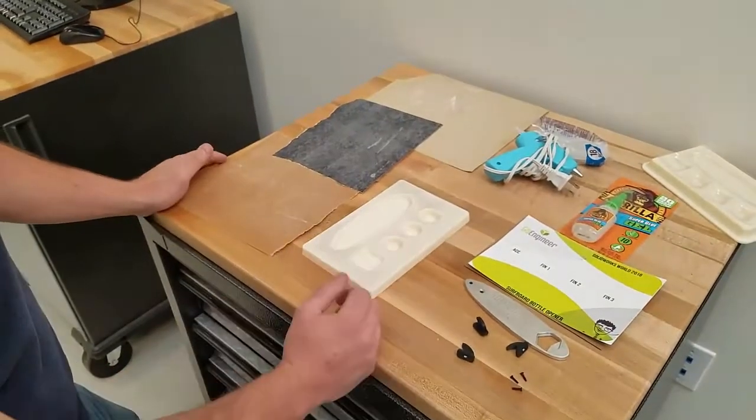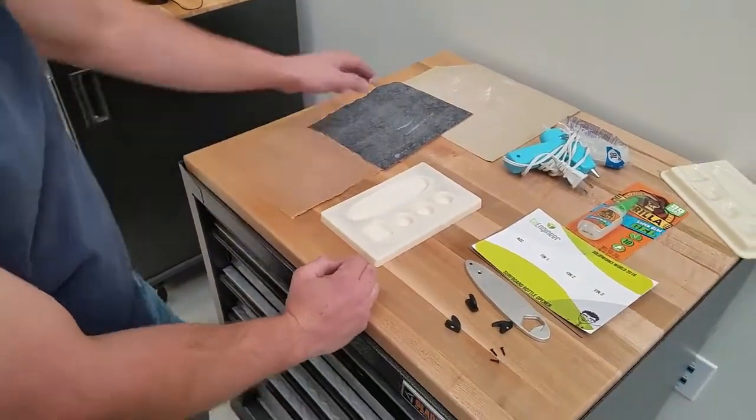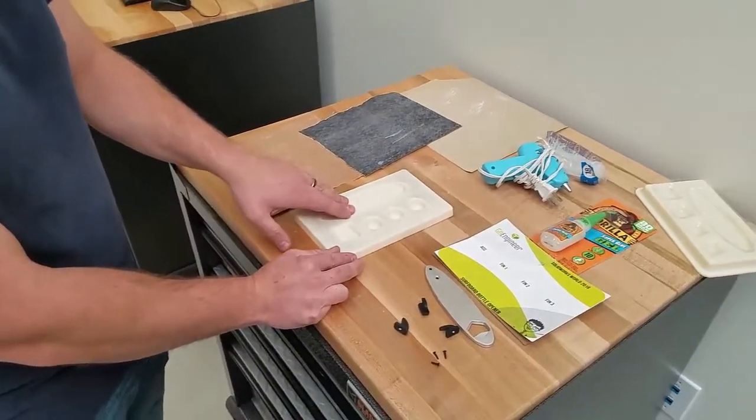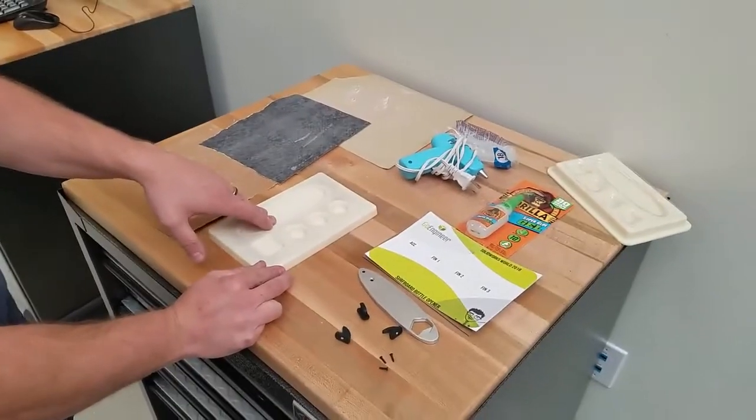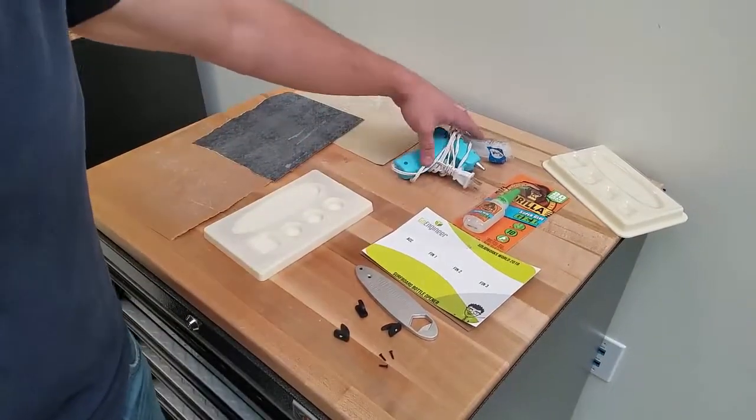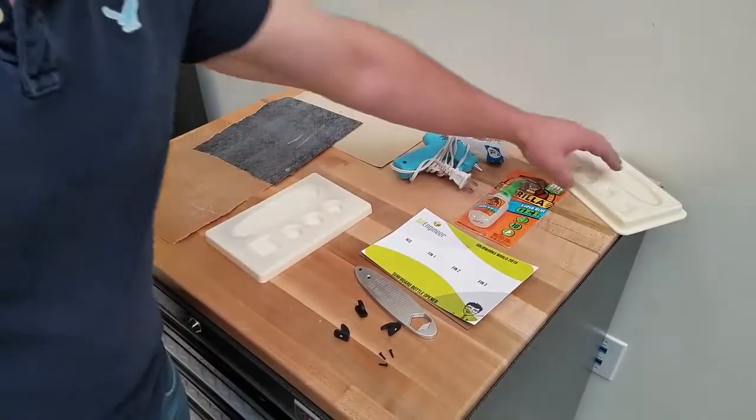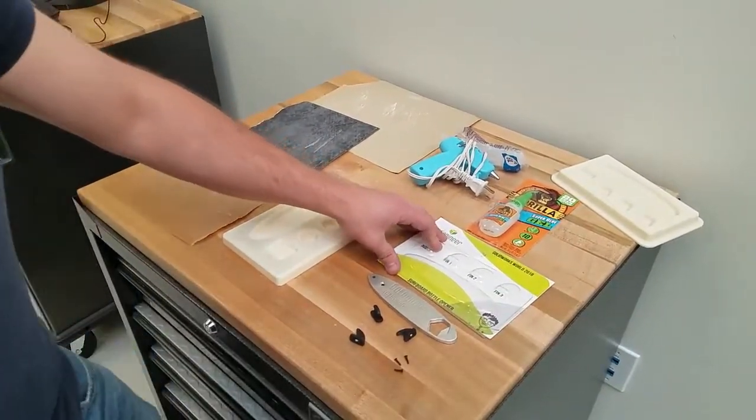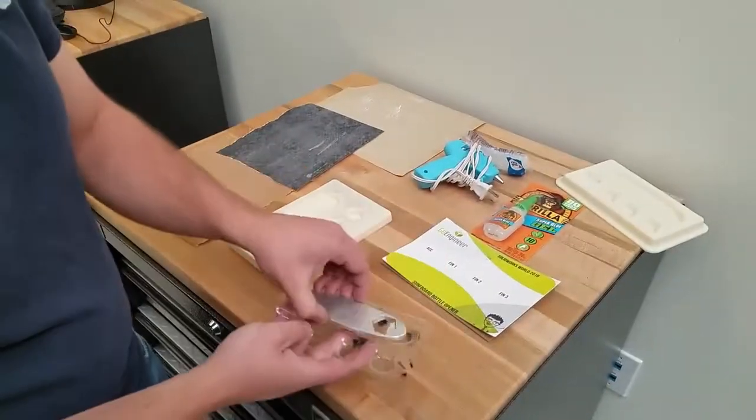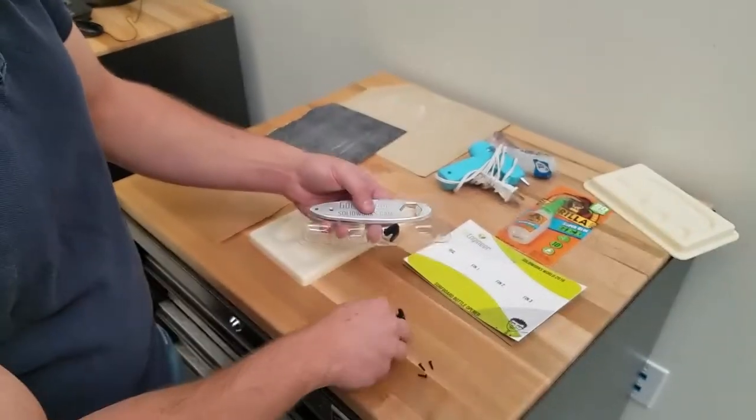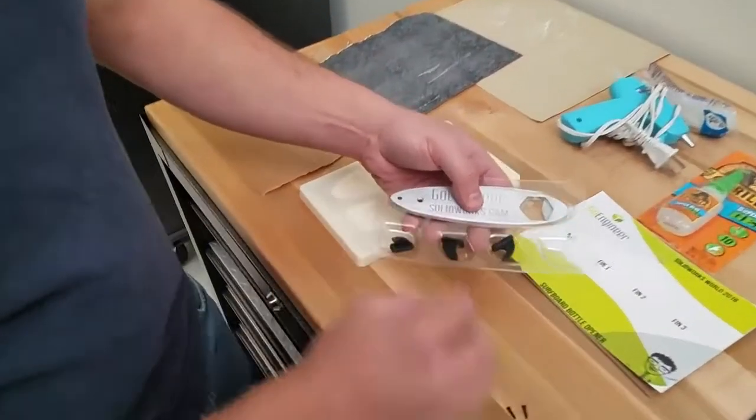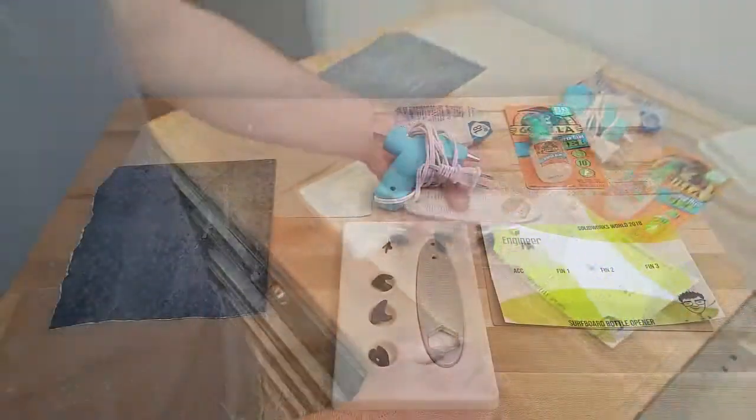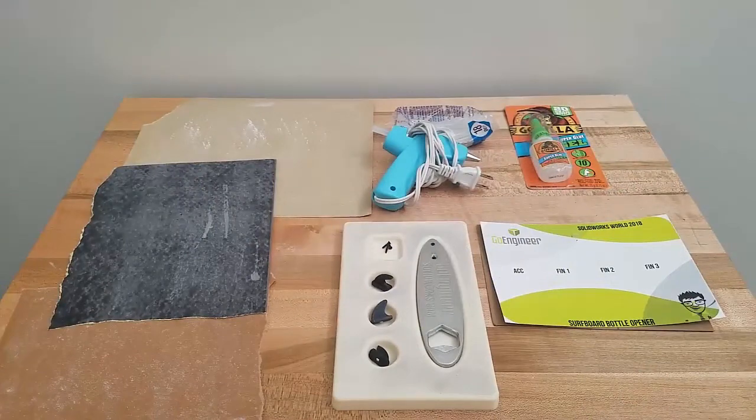So what you'll need is a 3D printed mold, some sandpaper to process this to make it smooth. That way we don't see any of the rastering lines in our vacuum form. You'll also need a hot glue gun or some super glue so that we can take the vacuum form and then glue it down to our cardboard to ultimately hold our surfboard bottle opener, fins, and hardware. So let's take a look at how we can do this.